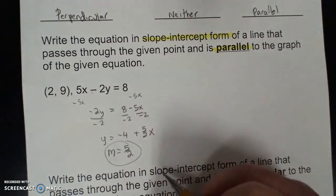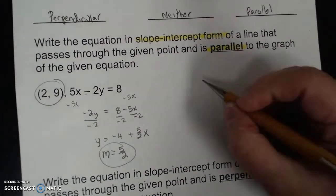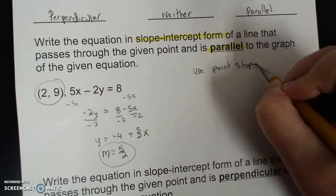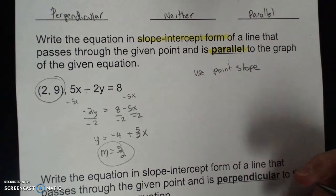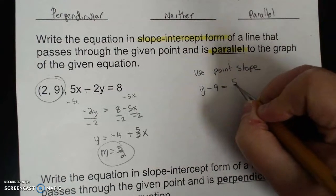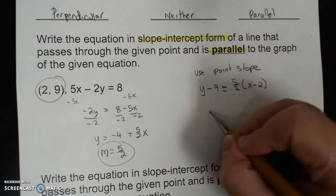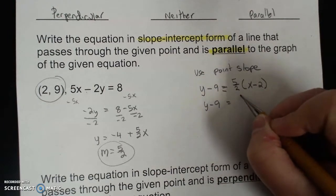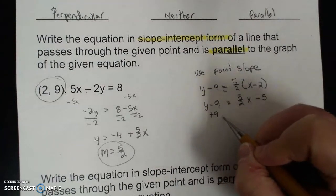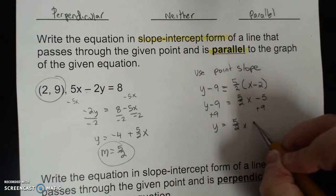That slope of 5 over 2 is what I'm going to use for the parallel line, and my point is (2, 9). So I'll use point-slope form: y minus 9 equals 5 over 2 times (x minus 2). That gives y minus 9 equals 5 halves x minus 5. Add 9 to both sides: y equals 5 over 2 x plus 4.